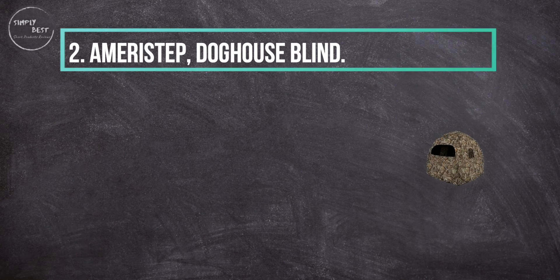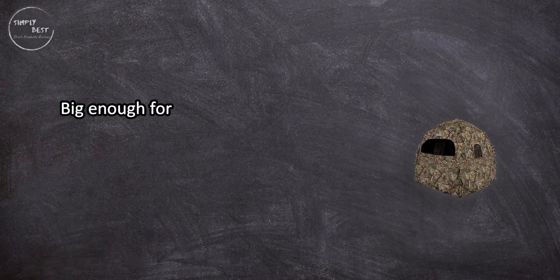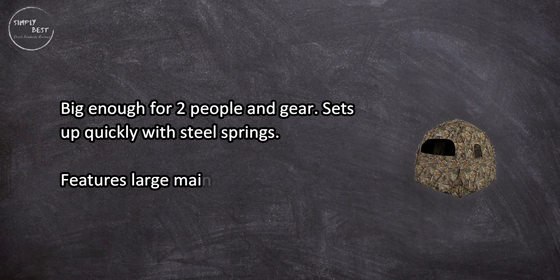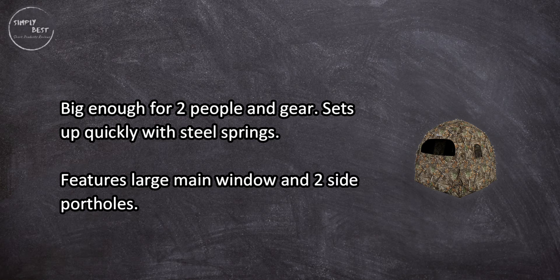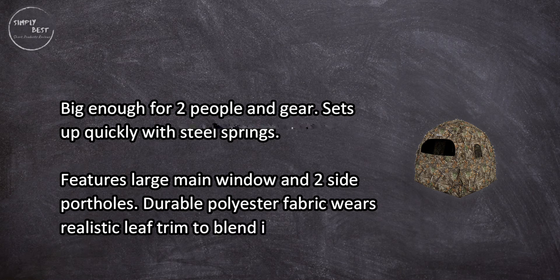At number two, Ameristep Doghouse Blind: big enough for two people and gear, sets up quickly with steel springs. Features large main window and two side portholes, durable polyester fabric with realistic leaf trim to blend in.